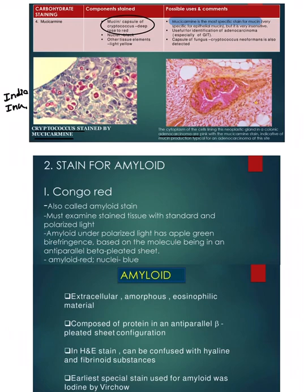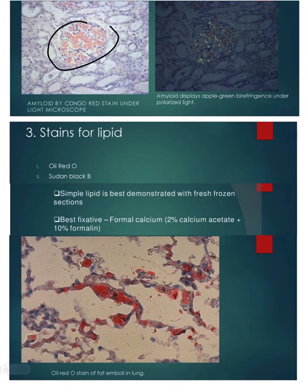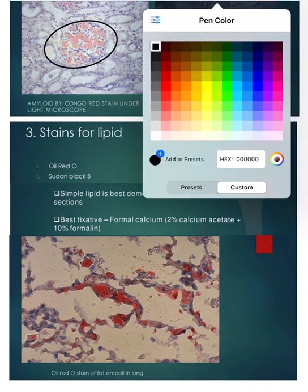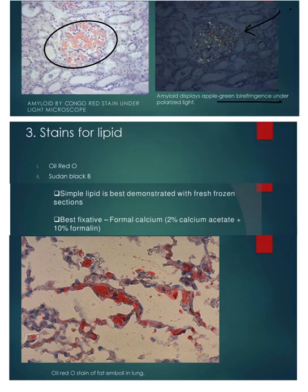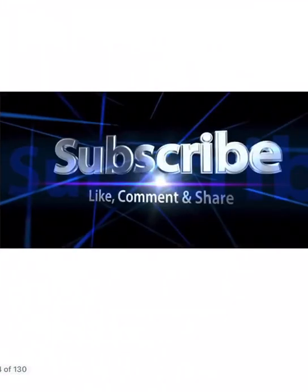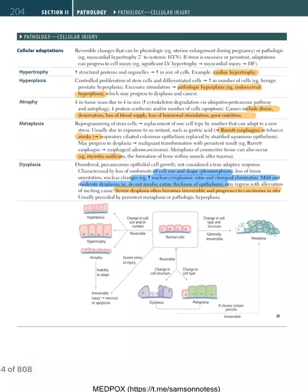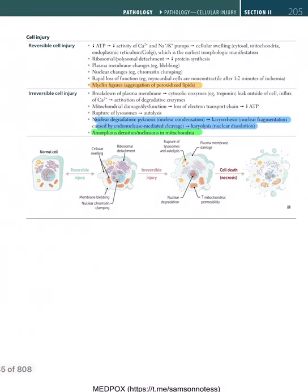Amyloid and Congo red: under light microscopy amorphous eosinophilic material appears pink. Under polarizing microscopy with Congo red stain, amyloid shows apple-green birefringence — a classical finding. Lipids demonstrated with frozen section using Oil Red O or Sudan black B — Oil Red O staining is a previous-year question.